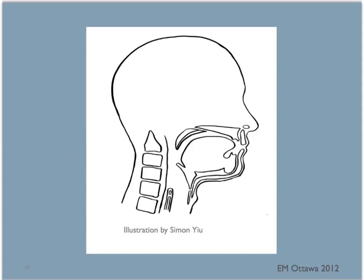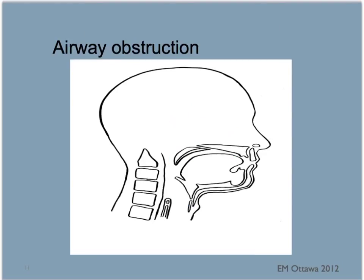Let us look at a cross-section of the upper airway. The tongue is here. The trachea is anterior to the esophagus. In a patent airway, air flows from the nasopharynx and oropharynx into the trachea. Secretions including blood and vomit can pool in the oral and nasal pharynx and further down the trachea, causing obstruction.